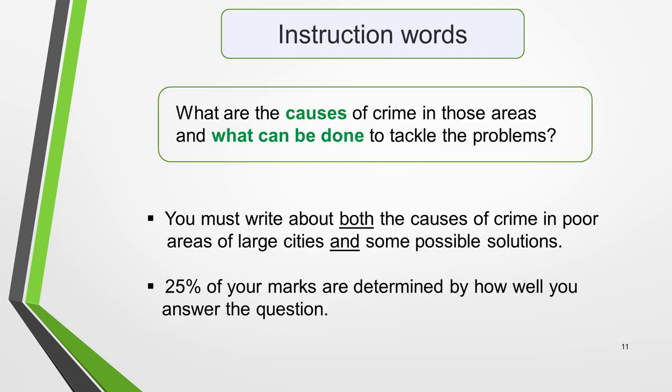The instruction words are all the words that come after the question statement. They tell you exactly what the examiner wants you to do. Our sample question is a causes and solutions question. It requires you to give clear ideas on both what causes crime in poor areas of large cities and some possible solutions. 25% of your marks are determined by how well you answer the question. A common mistake is to write about just one side of the issue — for example, just the causes — or to not fully develop both sides, resulting in an unbalanced essay.